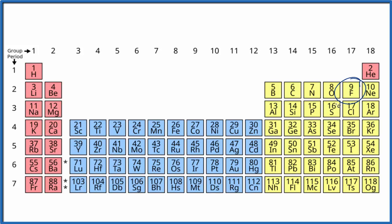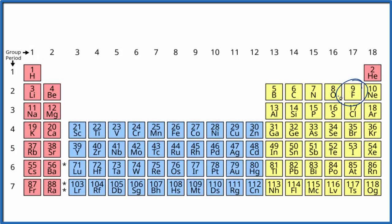So the first thing we need to do is write the electron configuration for fluorine. Fluorine has an atomic number of 9, that means it has 9 protons. Since all the elements are neutral on the periodic table, it has 9 electrons.